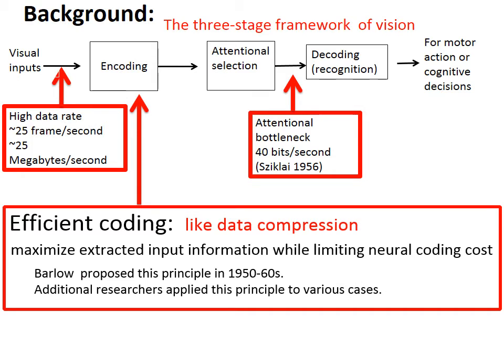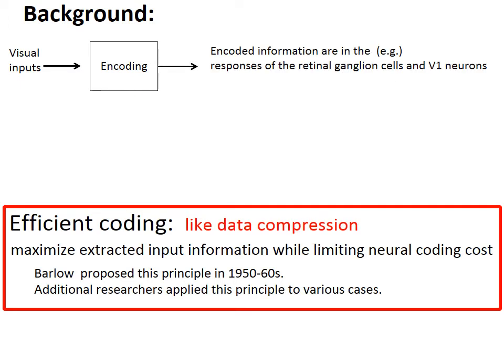Barlow proposed this principle in the 1950s and 60s. Others have applied this principle to various examples with further mathematical formulations. The encoded information is represented by the responses of the neurons, such as the retinal ganglion cells. The encoding transform from the raw input to the eyes to the ganglion cell responses is by the neural receptive fields, which can be called filters in engineering.